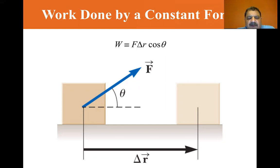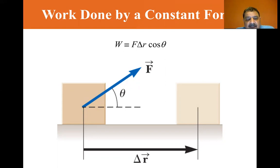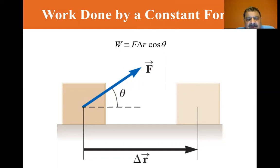The work done on a system by an agent exerting a constant force on the system is the product of the magnitude of the force, the magnitude of the displacement, and the cosine of the angle theta between them. Note that work is a scalar, even though it is defined by two vectors F and R — the product is a scalar.